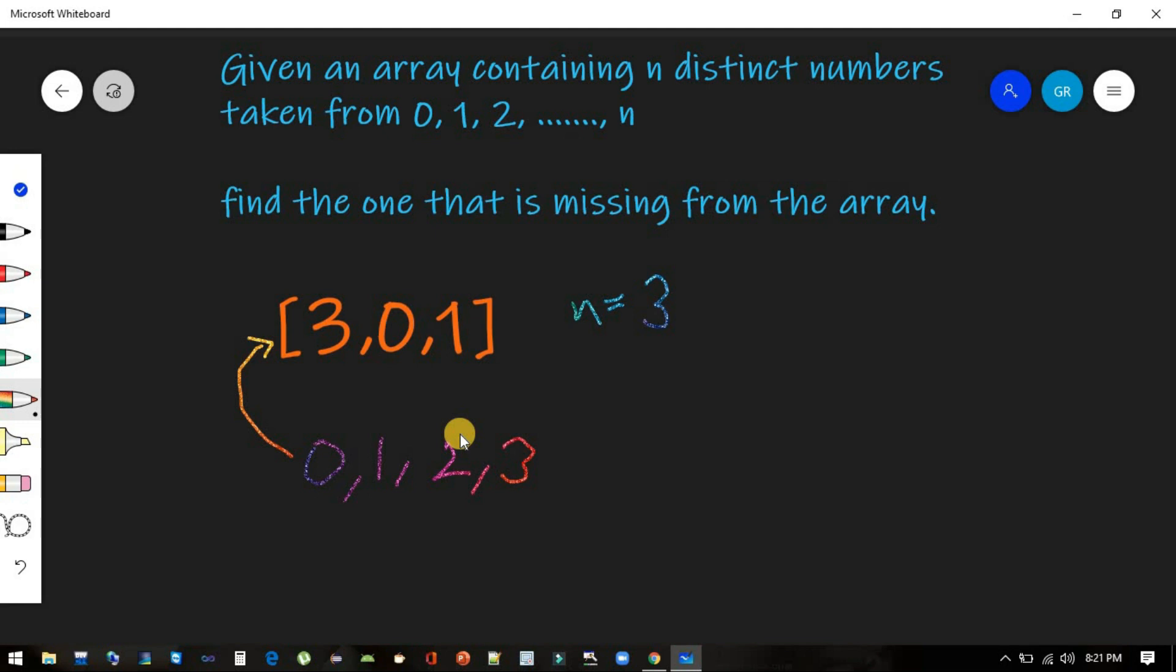So first approach that should come in your mind should be we will first create a new array and we will fill all those 0, 1, 2, and 3 and try to iterate this array.